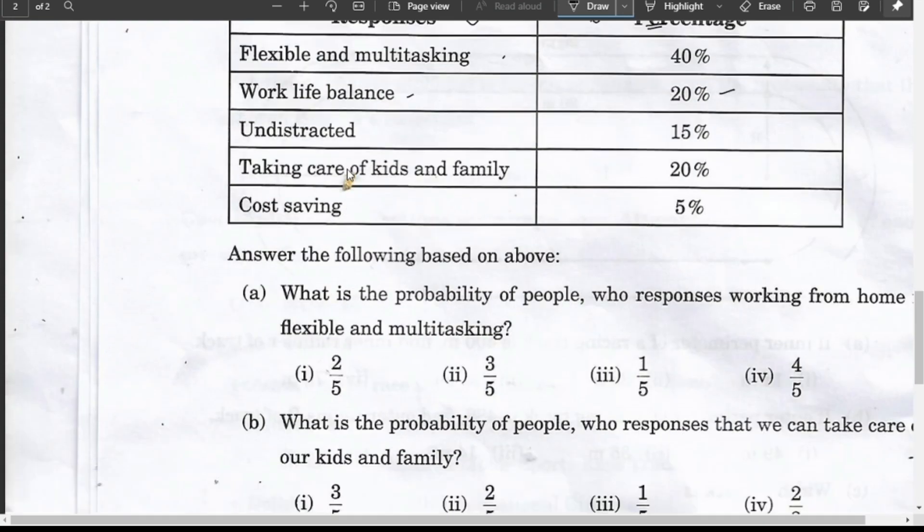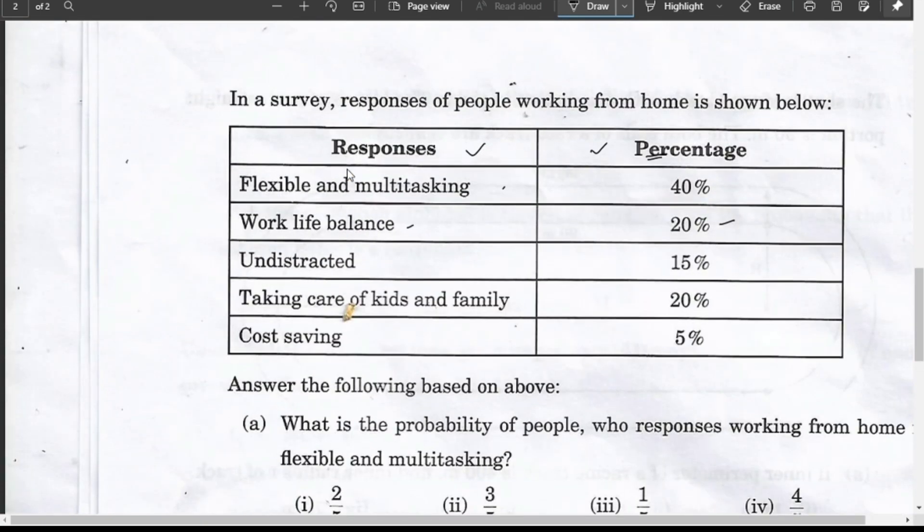Answer the following based on the above: What is the probability of people whose response is working from home flexible and multitasking? Now children, the most important thing is that probability of an event equals favorable number of outcomes divided by total number of outcomes. For total number of outcomes, since percentage is given, the total will be 100. You can add up all these percentages to verify they sum to 100. Flexible and multitasking is 40%.